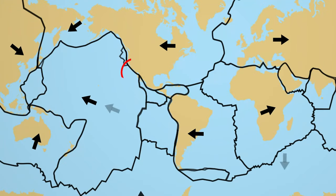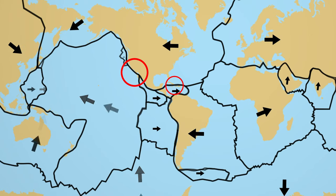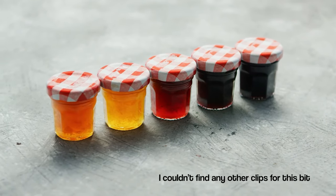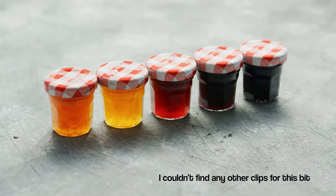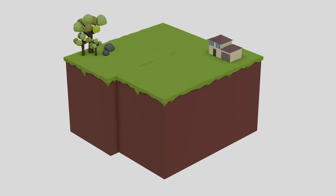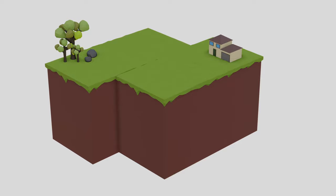Conservative boundaries, sometimes also called transform boundaries, are so named because the tectonic plates are not being constructed or destroyed here, so it is conserved, which means to be kept the way it is. These conservative boundaries happen at places where two tectonic plates are sliding past each other, either in opposite directions or in the same direction at different speeds.